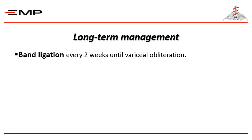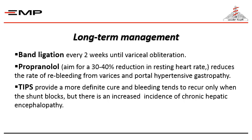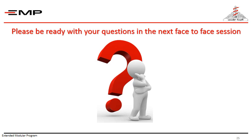For long-term management, we continue band ligation every two weeks until variceal obliteration occurs. Propranolol, a beta-blocker, is given aiming for a 30–40% reduction in resting heart rate; this reduces the rate of re-bleeding from varices and portal hypertensive gastropathy. Note that propranolol is not given at all during the acute attack. TIPS provides a more definitive cure, and bleeding tends to recur only when the shunt blocks, but there is an increased incidence of chronic hepatic encephalopathy.